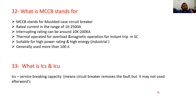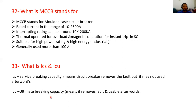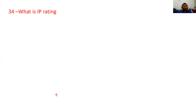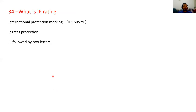What are ICS and ICU? ICS is service breaking capacity — the circuit breaker removes the fault but may not be used afterwards. ICU is ultimate breaking capacity — it removes the fault and is usable afterwards. This is the difference between ICS and ICU.